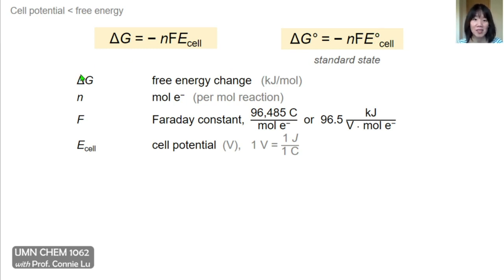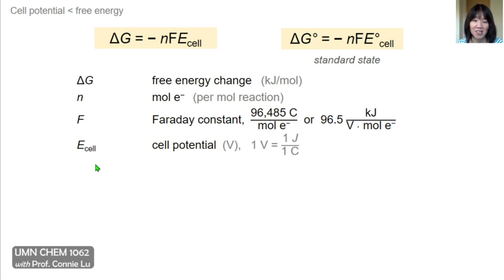When using these equations, be mindful of units. ΔG has units of kilojoules per mole. N represents the moles of electrons transferred per mole of redox reaction. Faraday's constant F has units of coulombs per mole of electrons. Cell potential has units of volts, and from physics, 1 volt equals 1 joule per coulomb. A more useful form of Faraday's constant is 96.5 kilojoules per volt per mole of electrons.